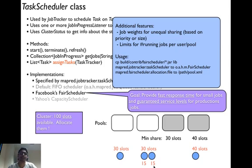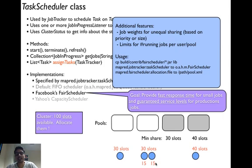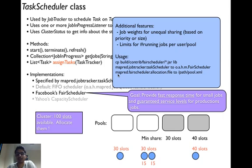Some additional features of the fair scheduler: you can specify job weights for unequal sharing based on priorities or size — for example, in the second pool you could provide weights so the first job receives 20 slots and the second receives 10 slots. You can also provide limits on the number of running jobs per user or per pool. To use the fair scheduler, make sure Hadoop can find its JAR by copying it into the lib directory, then point MapRed.JobTracker.TaskScheduler to the fair scheduler class. You also need to point the path to pool.xml using the property MapRed.FairScheduler.Allocation.File.